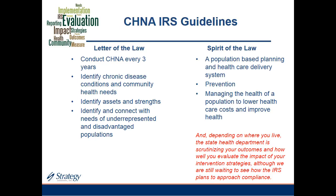I'm starting by talking about the IRS guidelines — the letter of the law. When the guidelines were published, people recognized they had to conduct a CHNA every three years, identify chronic disease conditions and healthy community needs, and look at assets and strengths. But the spirit of the law is clearly to create a population-based health planning and healthcare delivery system to focus health systems on prevention, managing the health of the population to lower healthcare costs and improve health — that triple aim.